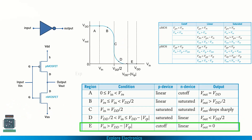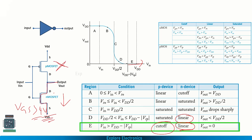In region E, above the previous point, Vgs is already more than about 4 volts and Vds is very low, so the N transistor continues in the linear region. Because Vgs has exceeded the threshold, the P transistor is completely off — it is in cutoff. Vout is completely zero because the output terminal is directly connected to VSS with no connection from the P-MOSFET.